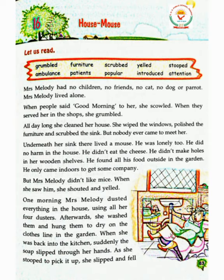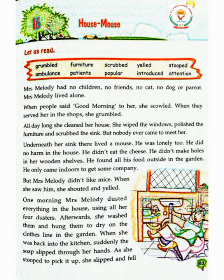One morning Mrs. Melody dusted everything in the house using all her four dusters. Ek subah Mrs. Melody apne ghar ki har chiz ko apne charo dusters ke saath saaf kar rahi thi. Ab dusters kya hote hai? Dusters hote hai jhaad, puk ya safai karne wale kapde. Afterwards she washed them and hanged them to dry on the clothes line in the garden. Uske baad unho ne unhe dhoya aur sukhne ke liye kapde sukhane waali rassi par bagiche mein taang diya. When she was back in the kitchen, suddenly the soap slipped through her hands. Jab vah kitchen mein vaapis aai to achanak unke haaton se sabun gir gaya.